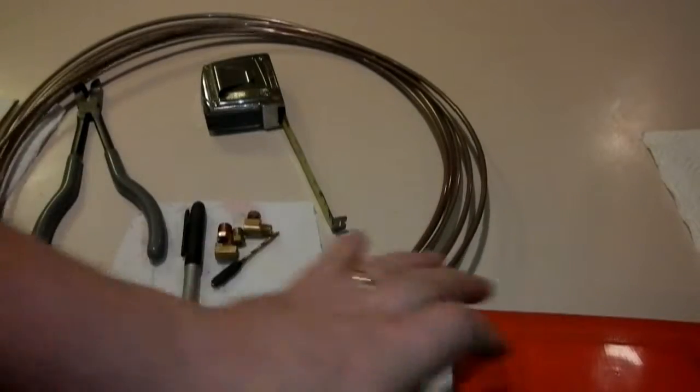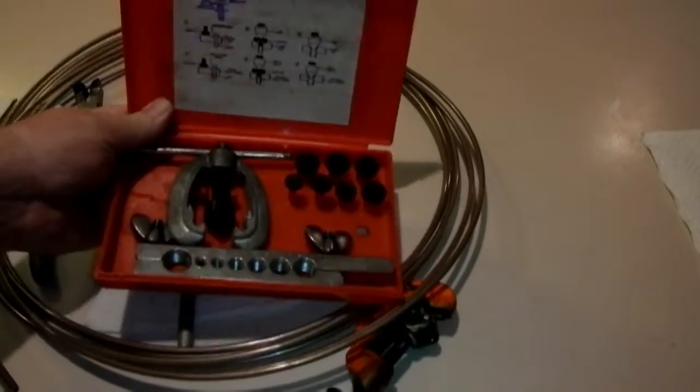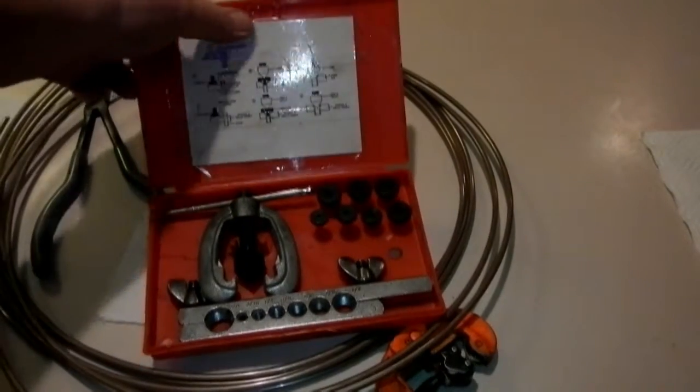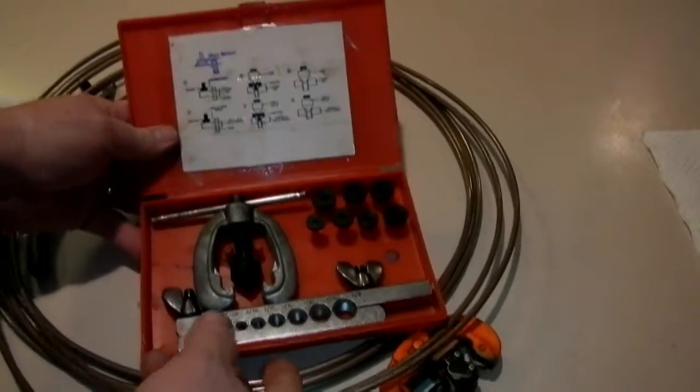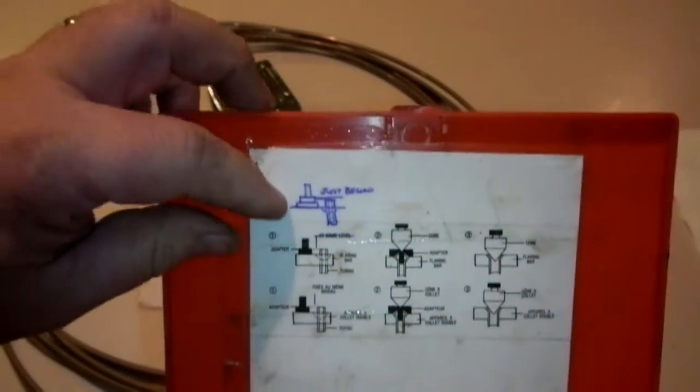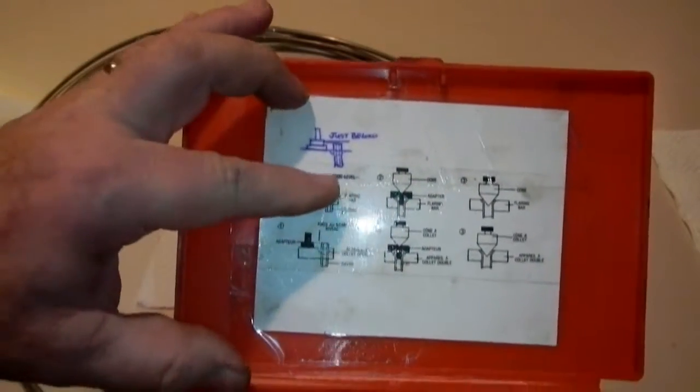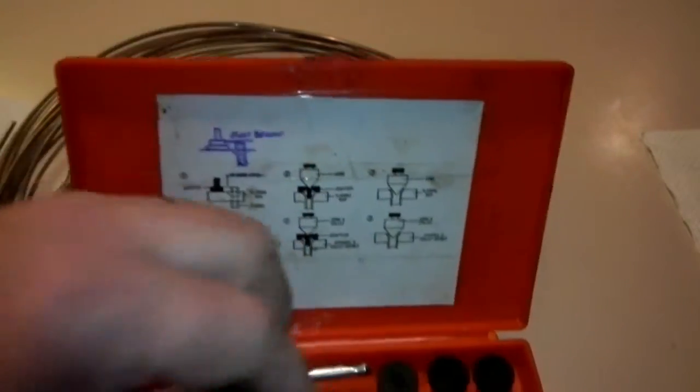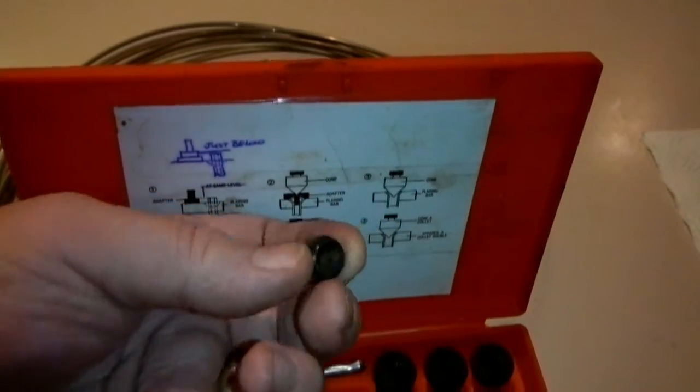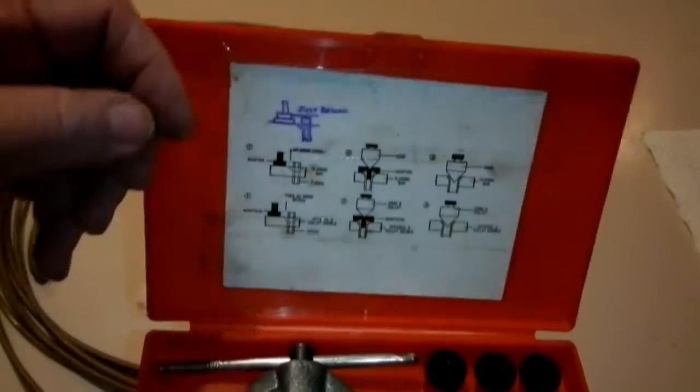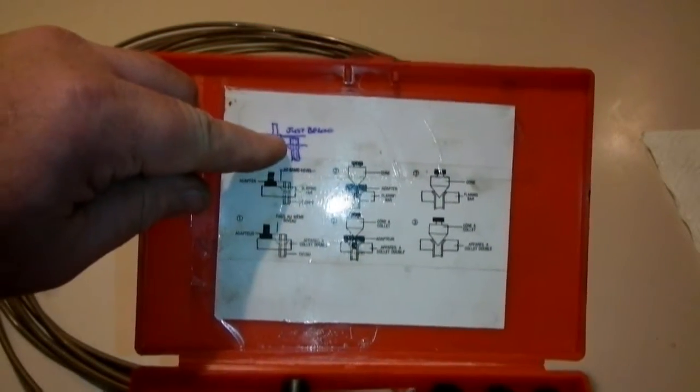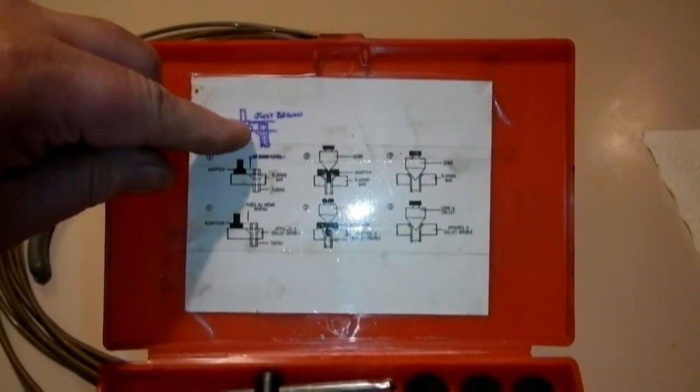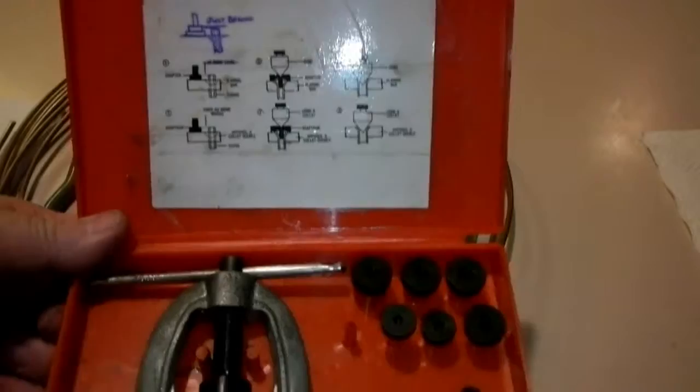Next thing we need to talk about is the handy-dandy Harbor flaring tool set. I taped instructions on the inside. When you put the tube through this vise, you're supposed to stick it out to the second tier on this little hat, this three-sixteenths hat. This makes a bubble, and I find that if I go a little bit below where they tell you to go, it makes a perfect flare.